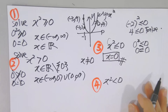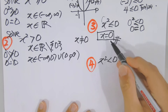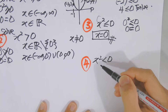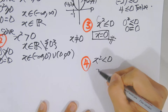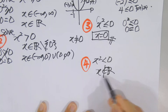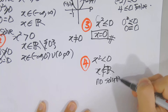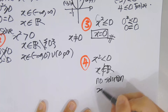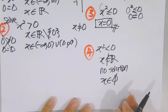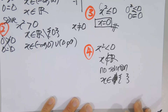Now what is the difference for Case 4: x² < 0? I believe you already have your answer. The answer is: no solution, or empty set.